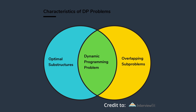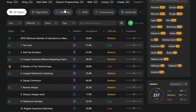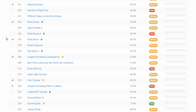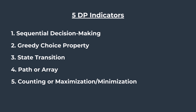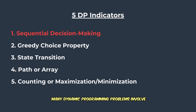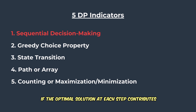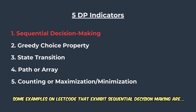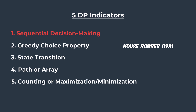Those are the two main characteristics that determine if a problem can be solved with dynamic programming. But before I end this video, I want to talk about a few patterns you can look out for. If you look at various dynamic programming problems on LeetCode, you can actually spot patterns amongst them — I found five indicators to look out for. The first is sequential decision making: many DP problems involve a sequence of decisions where each decision impacts future states. If the optimal solution at each step contributes to the overall optimal solution, that suggests a dynamic programming problem. Some examples on LeetCode are House Robber and Decode Ways.